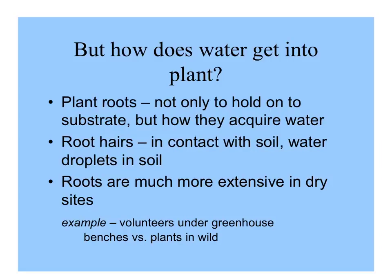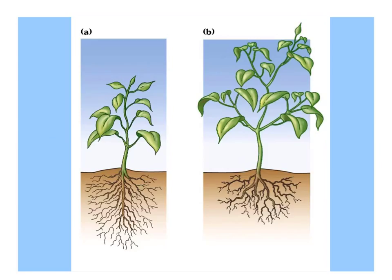One interesting observation you can make in our greenhouse and outside in weedy areas is that plants that grow as weeds in dry areas have much bigger root systems than those that grow in well-watered situations. In general, plants from well-watered situations are top-heavy, while plants that have to struggle for a living have more biomass under the ground.